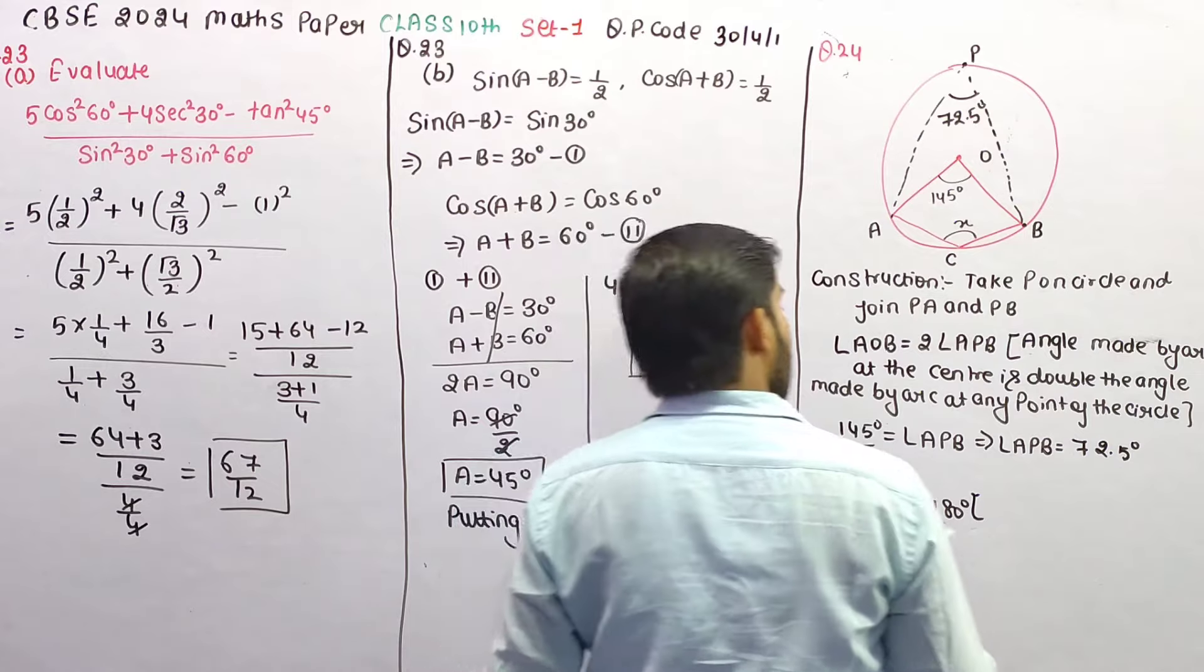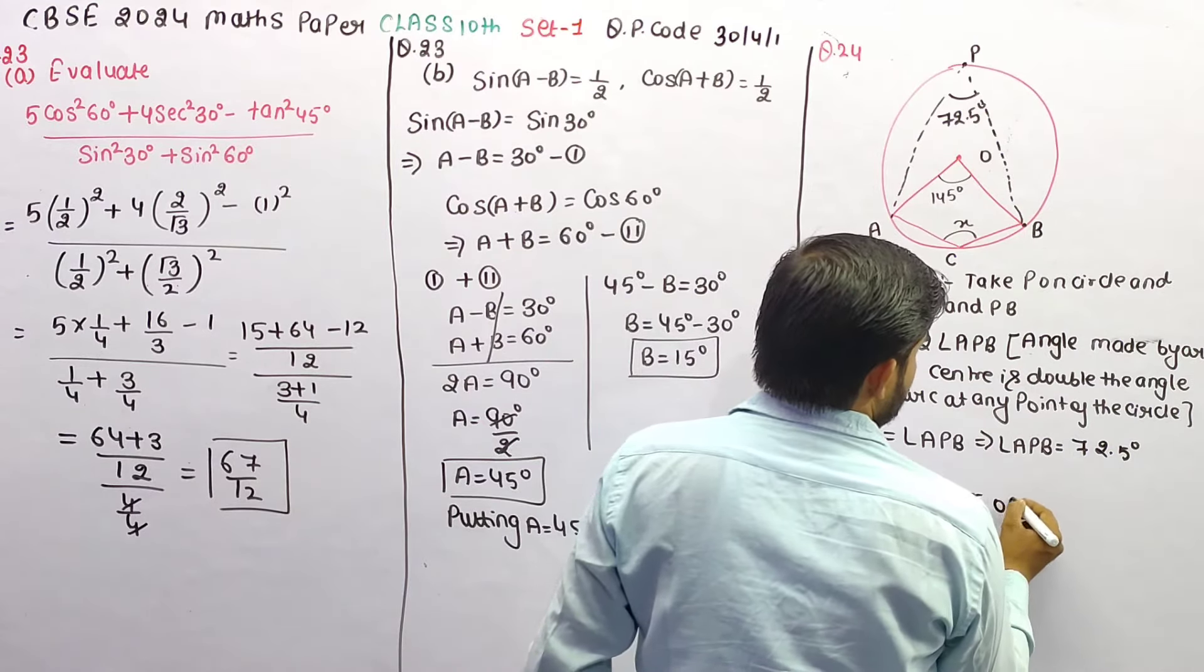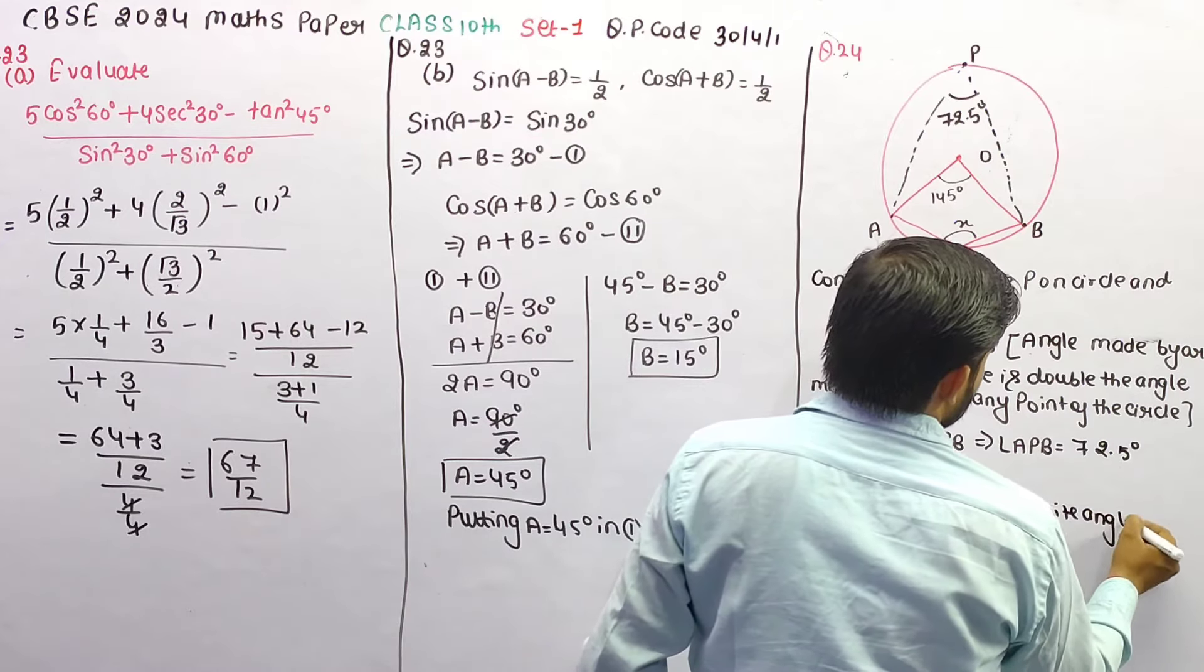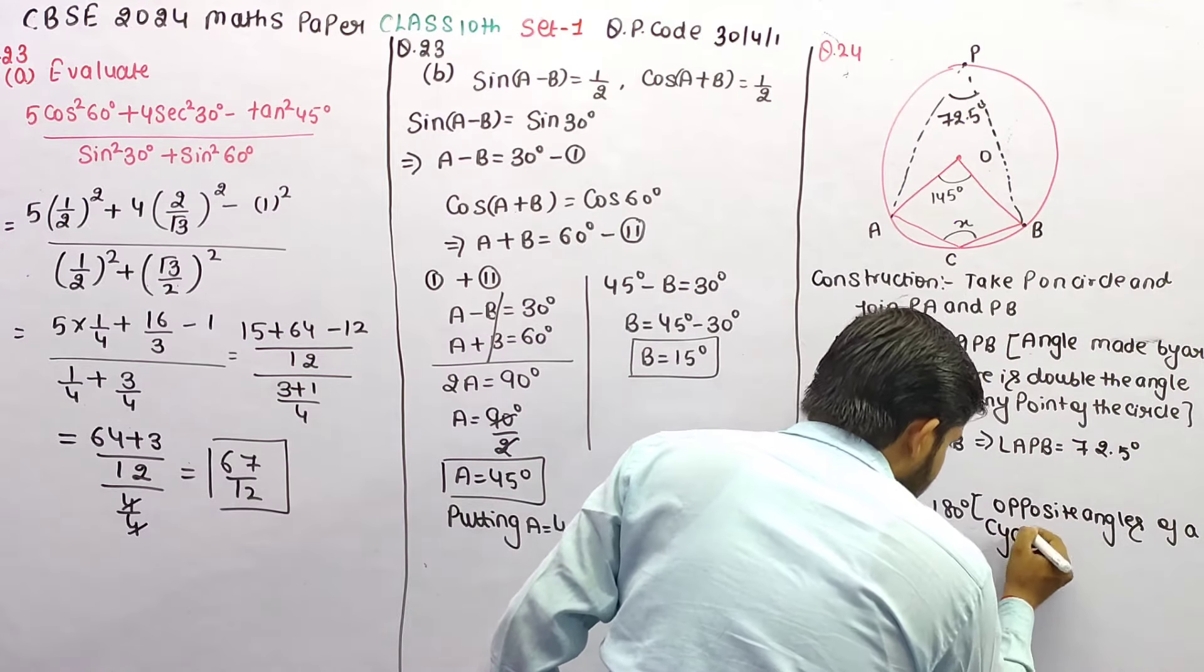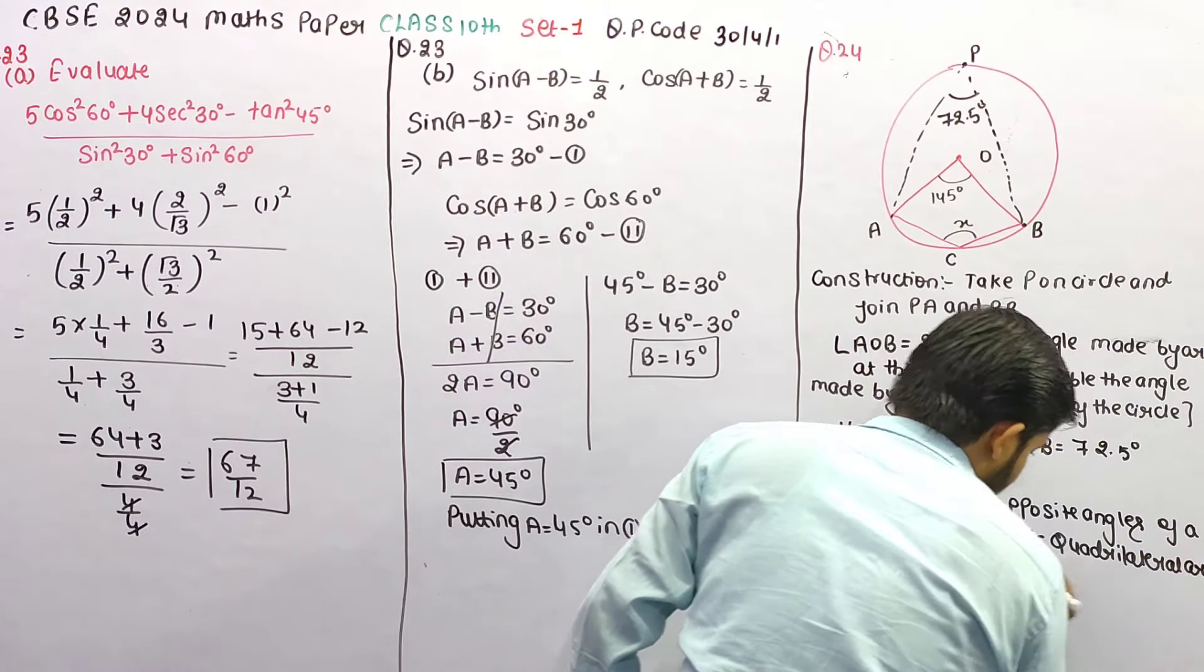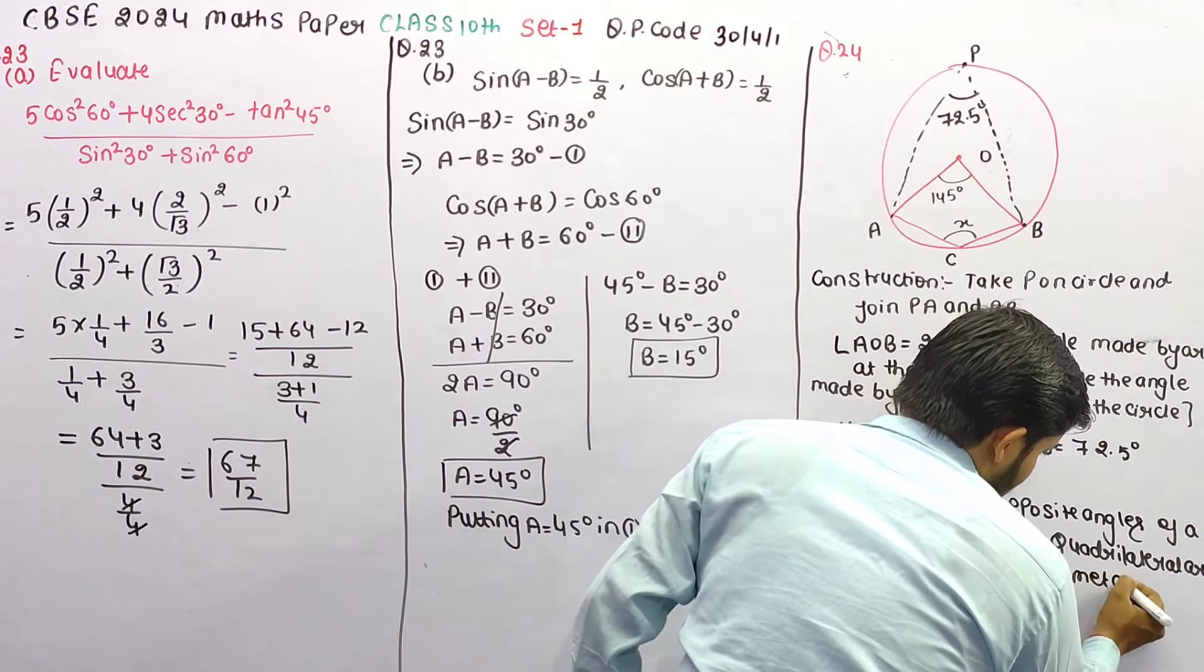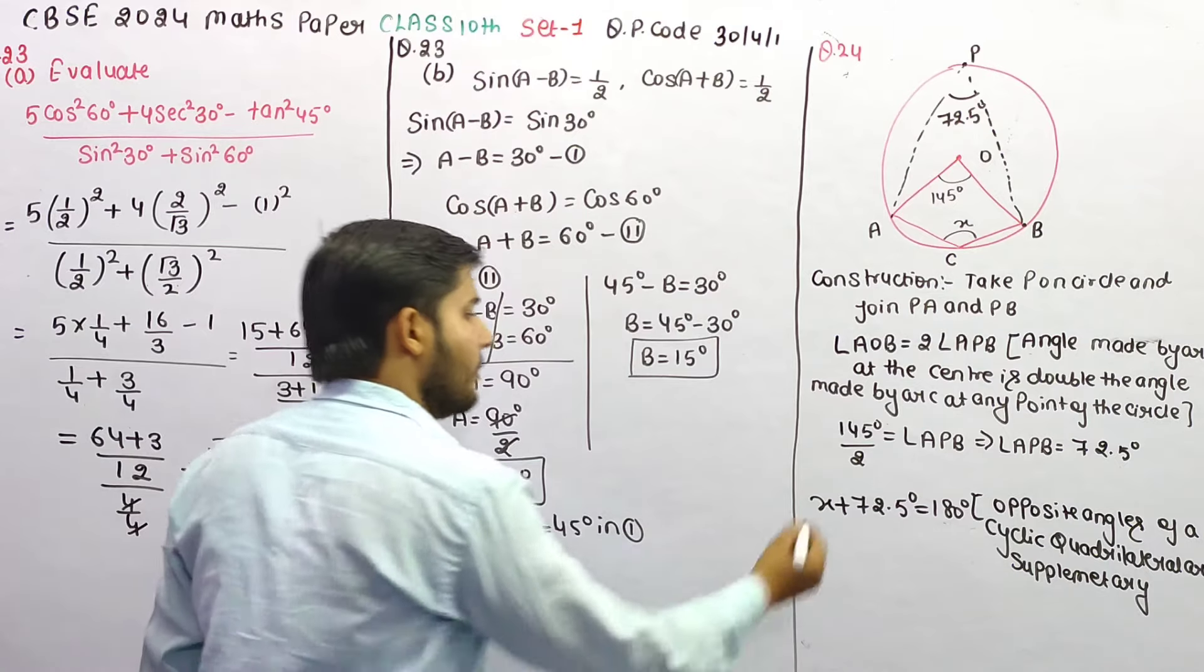Since opposite angles of a cyclic quadrilateral are supplementary, that means their sum is 180 degree.